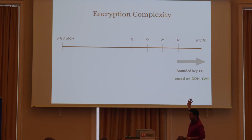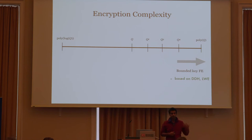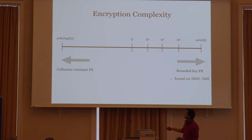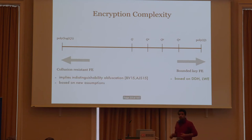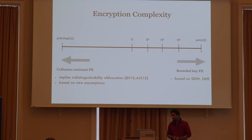On one extreme, we have FE schemes that grow polynomially in Q — we call these bounded key FE schemes. Bounded key FE schemes have limited but useful applications, such as constructing public key watermarking schemes, and we know how to construct them from standard assumptions like DTH and LWE. On the other extreme, we have schemes that grow polylogarithmic in Q — we call these collusion-resistant FE schemes. These are more powerful but we only know how to construct them from newer assumptions, because this implies indistinguishability obfuscation. If you want to know more, attend Rachel's talk on Wednesday.